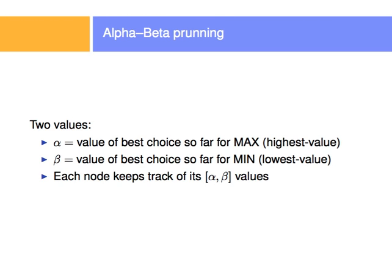Alpha-beta pruning is based on 2 values. We're going to track in alpha the value of the best choice so far for the player max. And beta is going to be the value of best choice so far for min. Each node will keep track of its alpha and beta values. I'm going to illustrate the algorithm using alpha and beta that are global, but you should know that there's local alpha and betas, and I'm going to give the algorithm at the end in which the local alpha and beta will be clear.